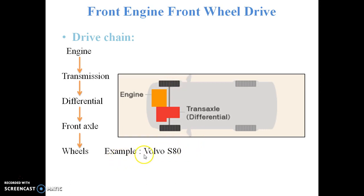An example of this type is the Volvo S80. The advantages are that it is the most compact layout and is mainly used in most Indian hatchback cars. There is no need for a propeller shaft so the design is quite simple, and since the engine is at the front there is natural cooling of the engine. The disadvantage is that there is high noise transmission between the driver cabin and the engine compartment.